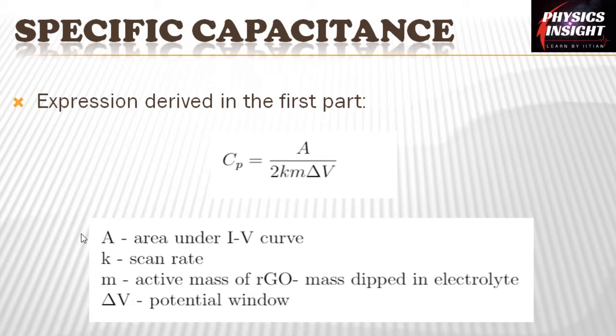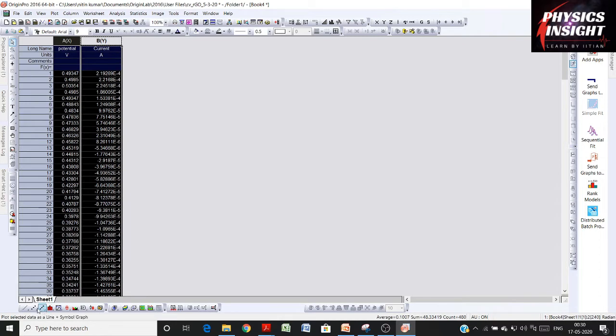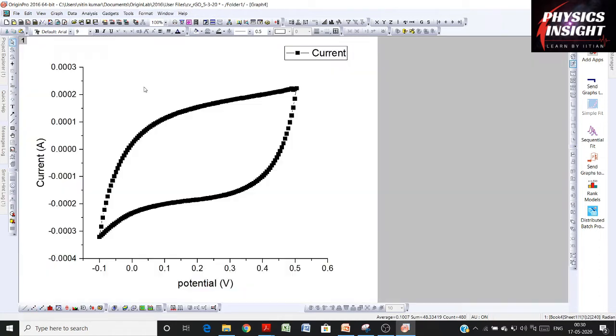So let's start. This is CV data that I have got from performing an experiment. Let's analyze this data by plotting the CV curve. The curve looks something like this.